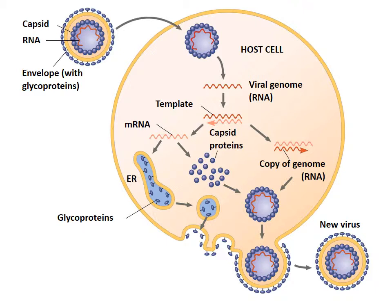The virus enters into the host cell. The viral RNA can be used to either make more RNA or make mRNA, which is used to make proteins. The proteins can be used for the capsid or the envelope. Then we assemble the RNA, capsid, and nucleic acid together. As the viral replicate leaves the host cell, it picks up the envelope from the cell membrane and you get a new virus.